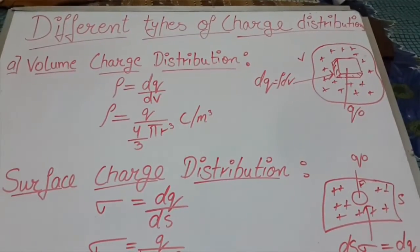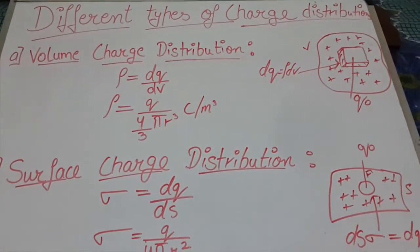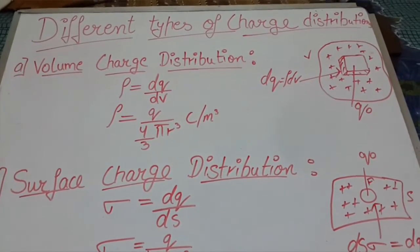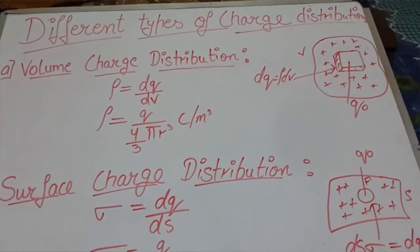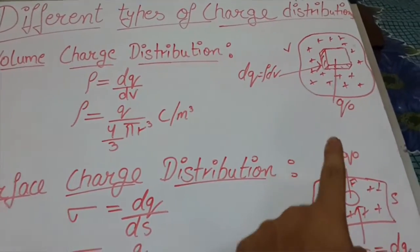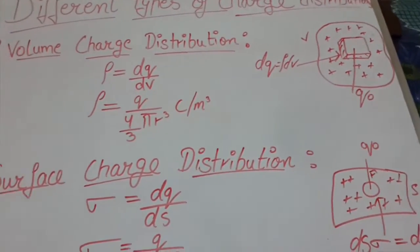Now we will talk about different types of charge distribution. The first is volume charge distribution. It is a charge distribution spread over a three dimensional volume or region V of space. Here we can see that dq is the charge number of charges contained in the dV volume and q0 is a single point charge.